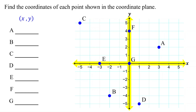Remember, the first number is always the x-coordinate, and the second number is always the y-coordinate. To find the coordinates of a point, first move vertically from the point to the x-axis to find its x-coordinate. Then, move horizontally from the point to the y-axis to find its y-coordinate.